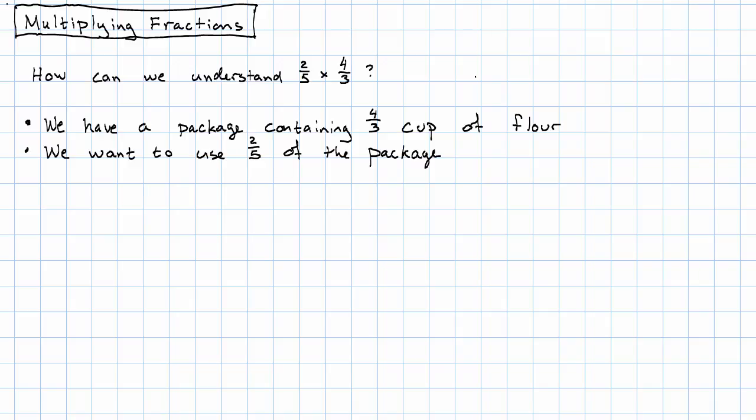So we take 2/5 of the package times 4/3 of a cup per package. What will that give us? The first thing we need to do is take each third of a cup and split it into 5 equal parts.